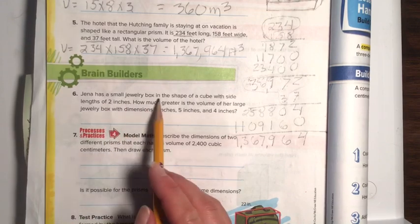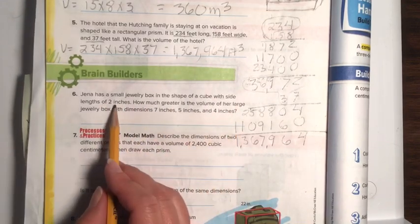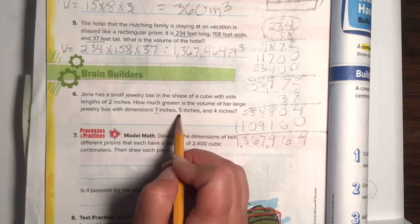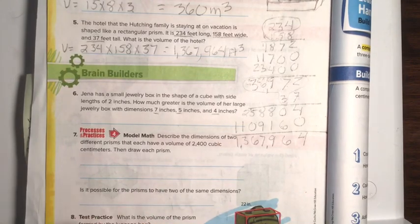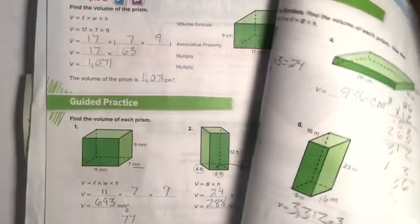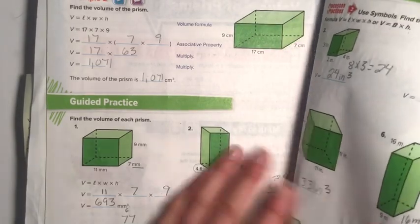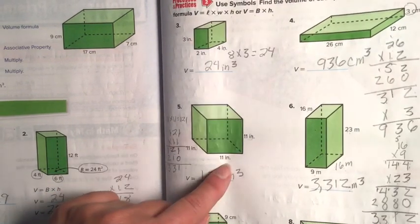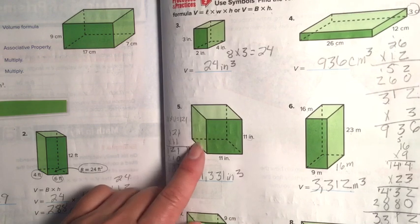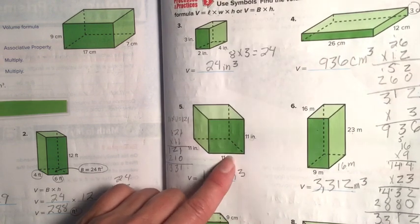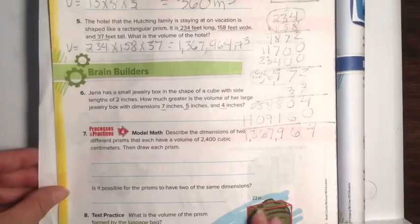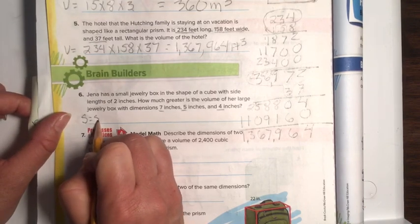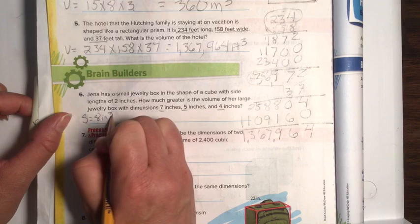Okay, number 6. Jenna has a small jewelry box in the shape of a cube with side lengths of 2 inches. How much greater is the volume of her large jewelry box with the dimensions of this, this, and this? Okay. So she has a cube. She has a perfect cube. So she has a cube like this, except it's in 2 inches. So we know 2 times 2 times 2 instead of 11. So 2 times 2 is 4, and then 4 times 2 is 8. So the small box equals 8 inches cubed.